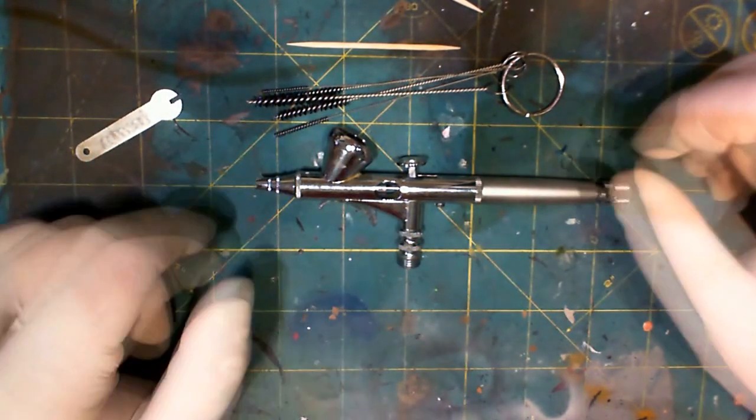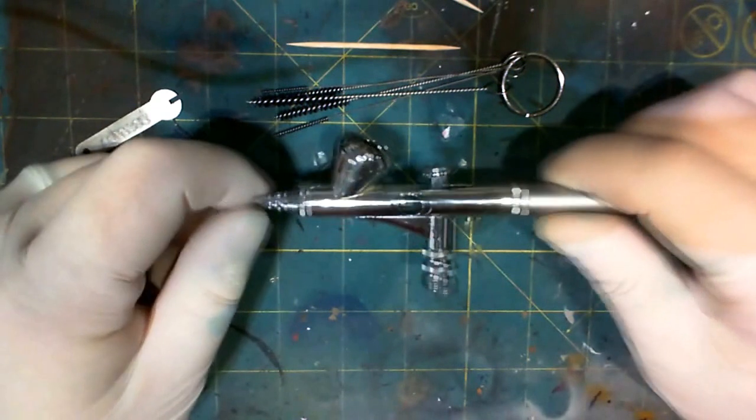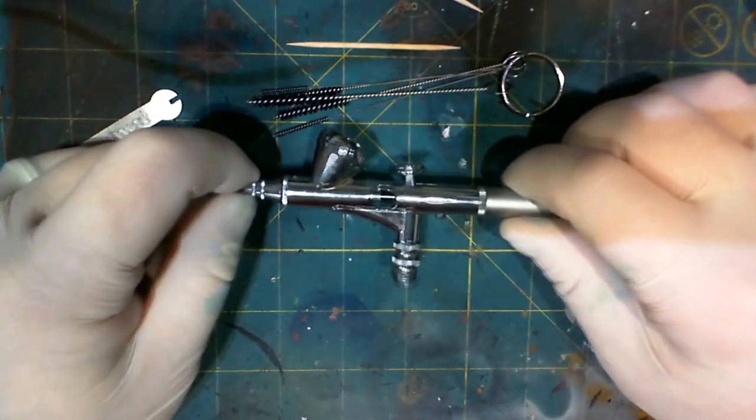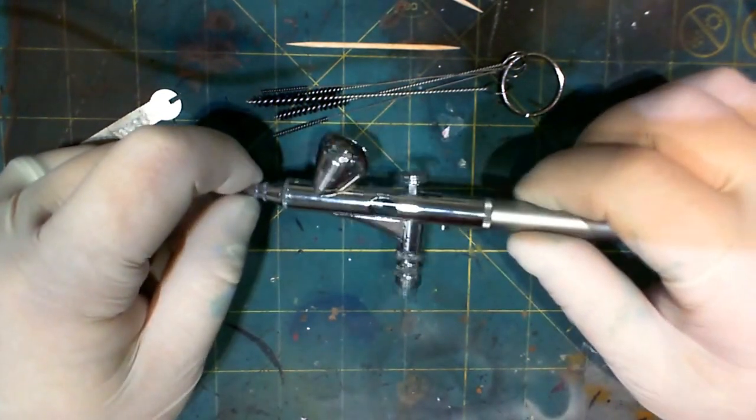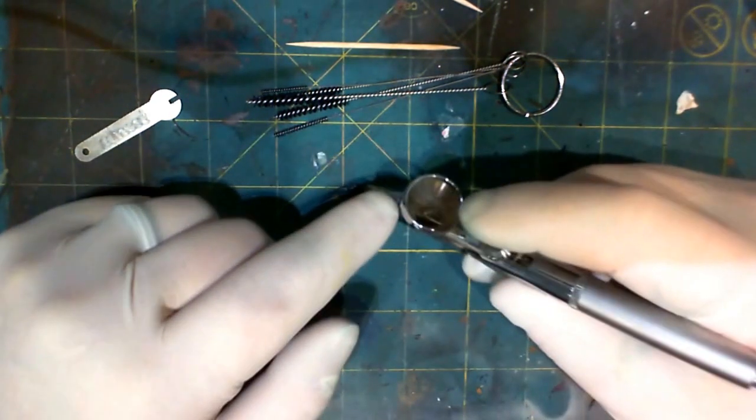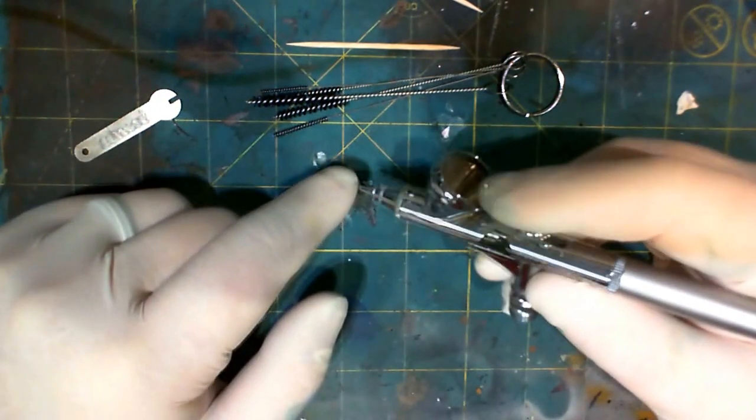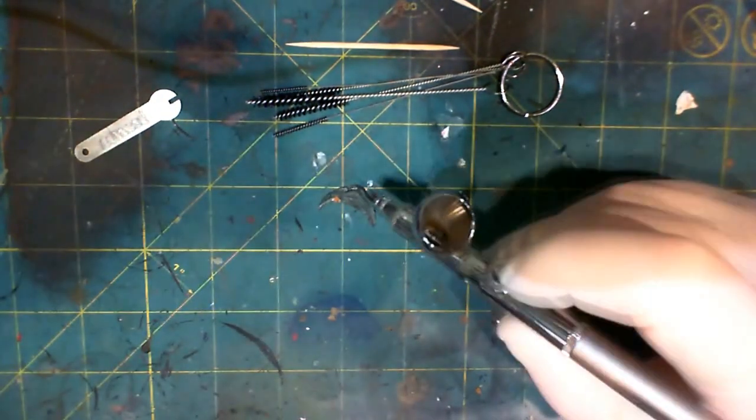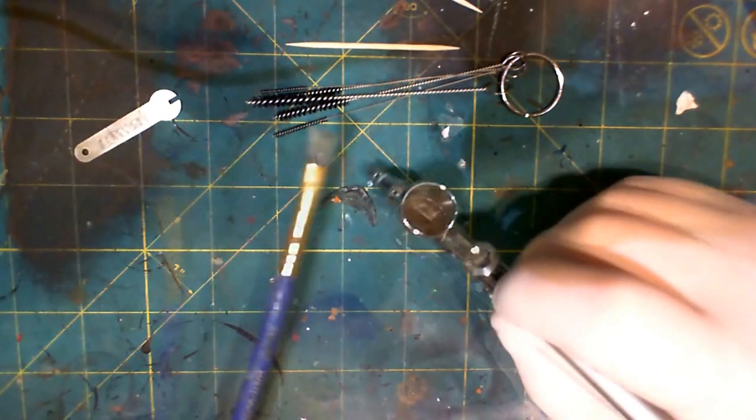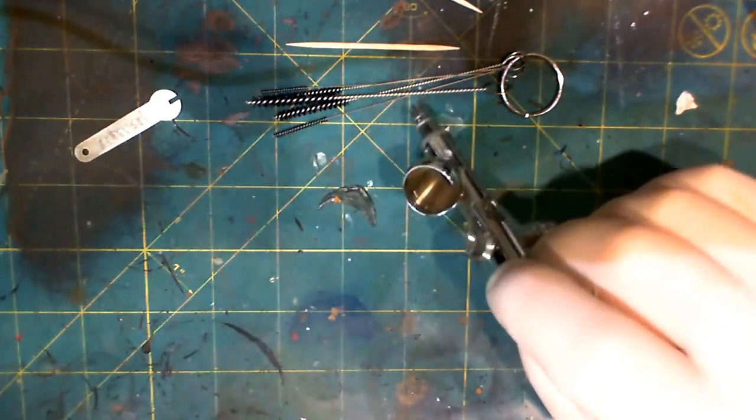So let's just get to it. The first thing you're going to want to do - this one hasn't been cleaned in a while. I normally do a spray through, which is when you just put your cleaner in the reservoir and just spray it through. I usually use a brush to clean out the reservoir when I do that process.